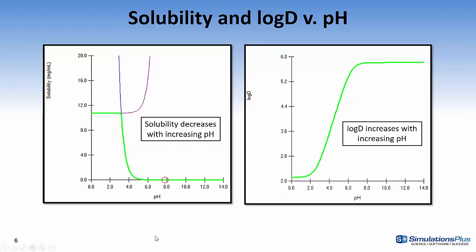These are the plots in GastroPlus and I'll show these when I demonstrate the software. Note that at very low pH the solubility is high and then as you increase the pH you decrease the solubility, whereas the log D goes in the opposite direction.